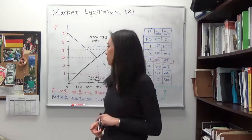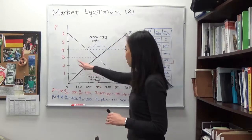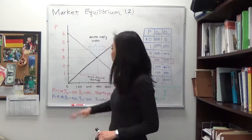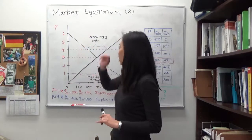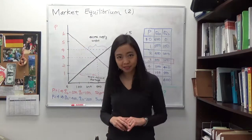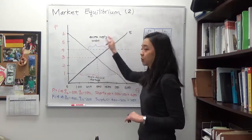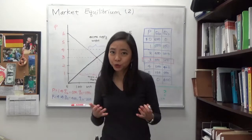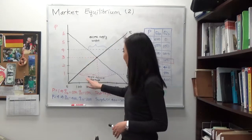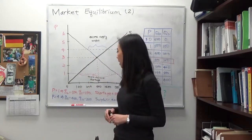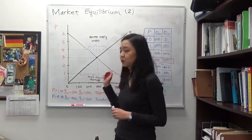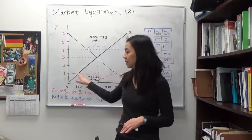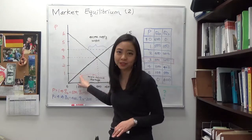So what happens when the price deviates from your equilibrium price? If the price is too high, then we have an excess supply, or we call that a surplus. And if the price is too low — lower than equilibrium price — then we have a shortage or excess demand, meaning your quantity demanded is higher than quantity supplied.